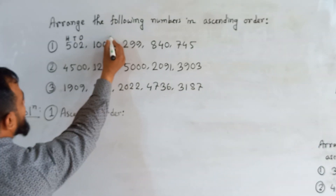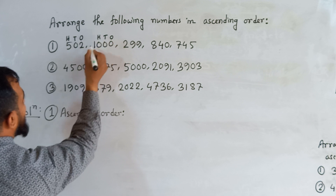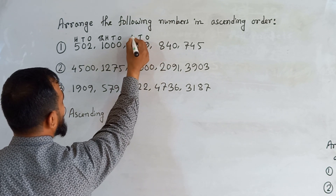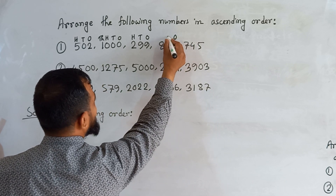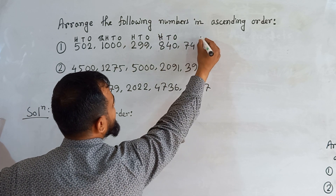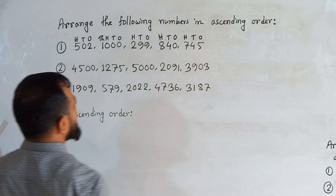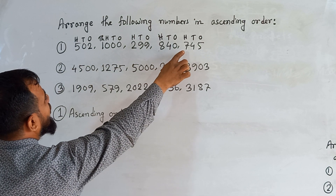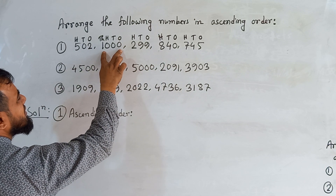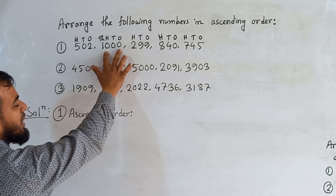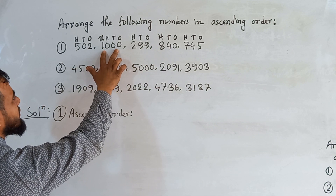The second number: the first zero is in the ones place, the second zero is in the tens place, the third zero is in the hundreds place, and 1 is in the thousands place. Then 9 is in the ones place, 9 is in the tens place, 2 is in the hundreds place. We compare the highest place values to find the biggest number. The number with thousands place is the biggest — so it goes last.